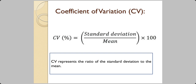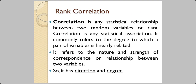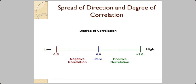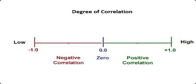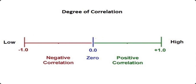The coefficient of variation is (standard deviation / mean) × 100. Rank correlation is a statistical relationship between two random sets of data showing how they relate linearly. Such data has nature (direction) and strength (degree). Correlation is represented between 0 and +1 for strong positive correlation, and between 0 and −1 for strong negative correlation.